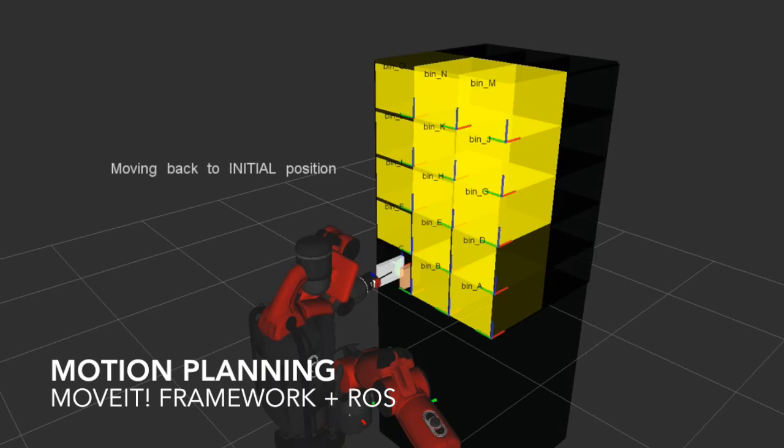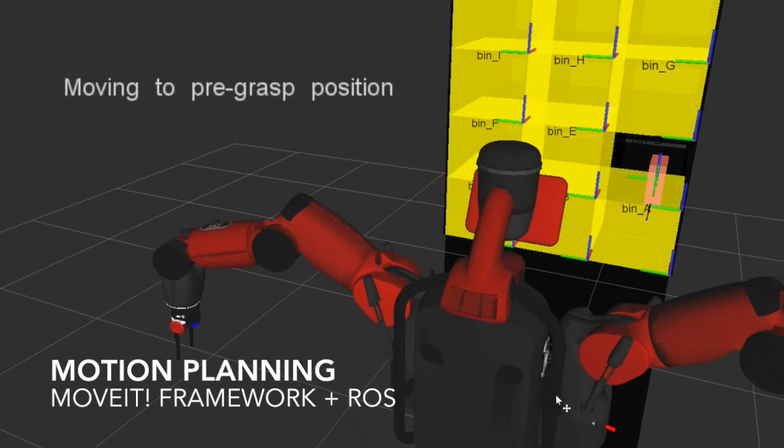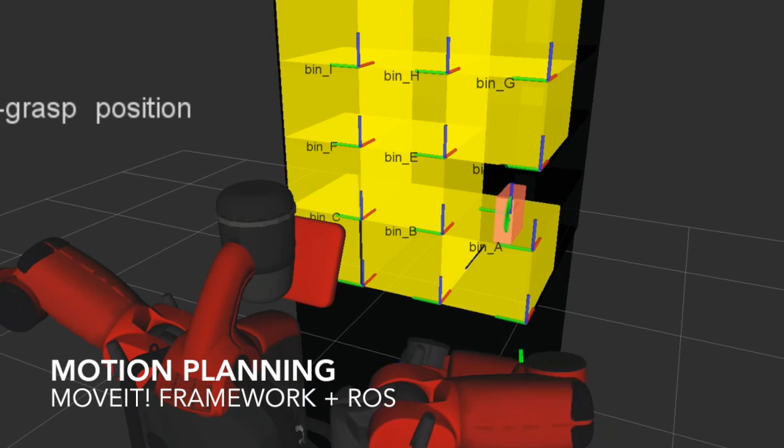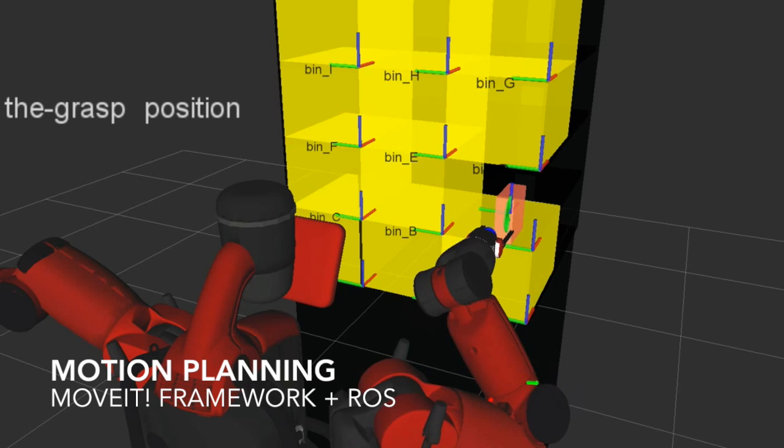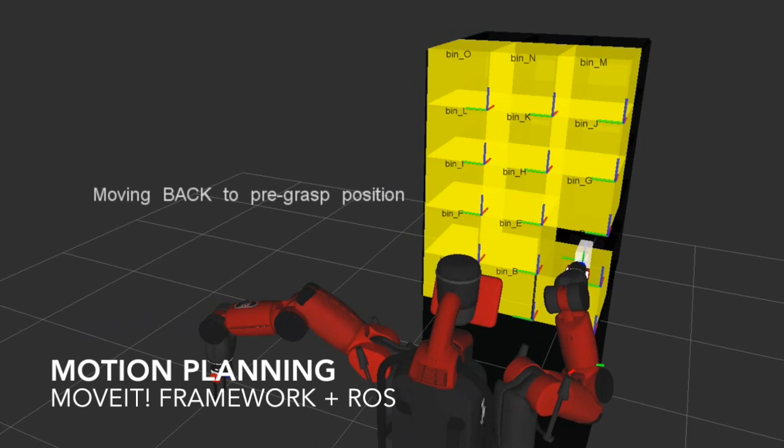We believe one of the main challenges to this competition will be smarter generation and selection of grasps given arbitrary placement poses within the shelf bins. Our team will devote a large amount of effort in this dexterous manipulation problem by testing various end-effector configurations.